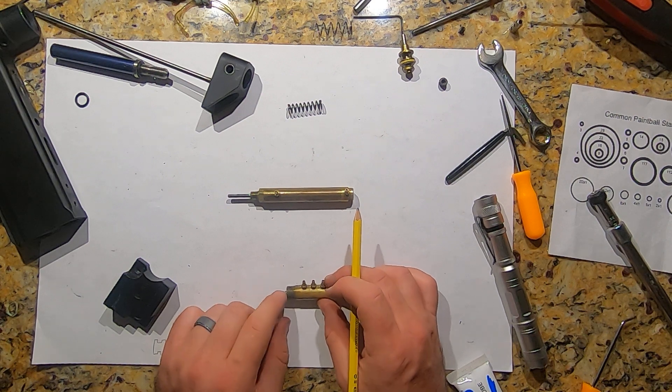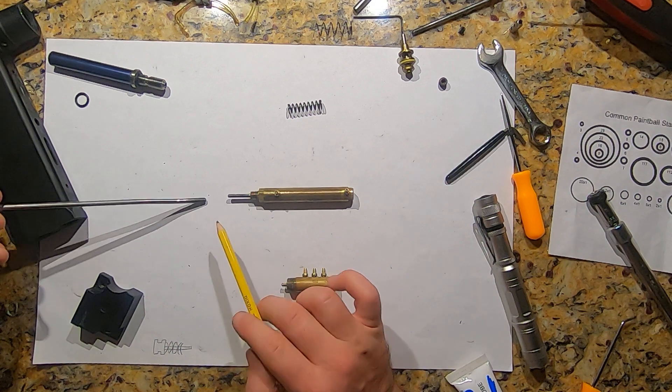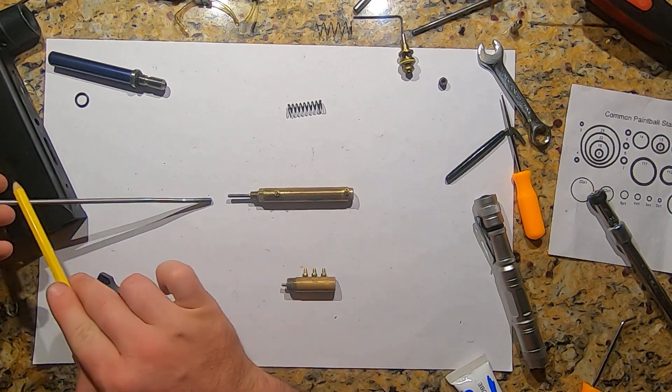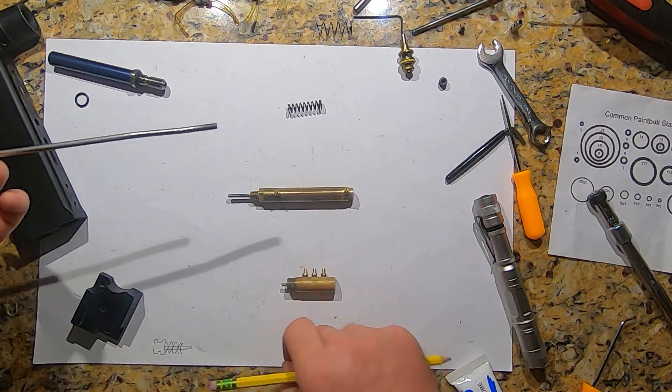It's a relatively simple setup. This ram attaches to this rod that goes to the back block, pulls on the cocking rod, and cocks the gun.